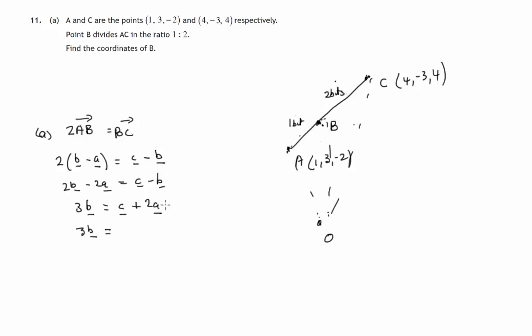Before we do anything else, let's see what the components of these vectors are. Component of little c, how do you get from the origin out to point C? Well, you go 4, -3, 4. That's the components of the journey from the origin out to point C. Plus twice, and what are the components of vector A? Origin out to A: 1, 3, -2.